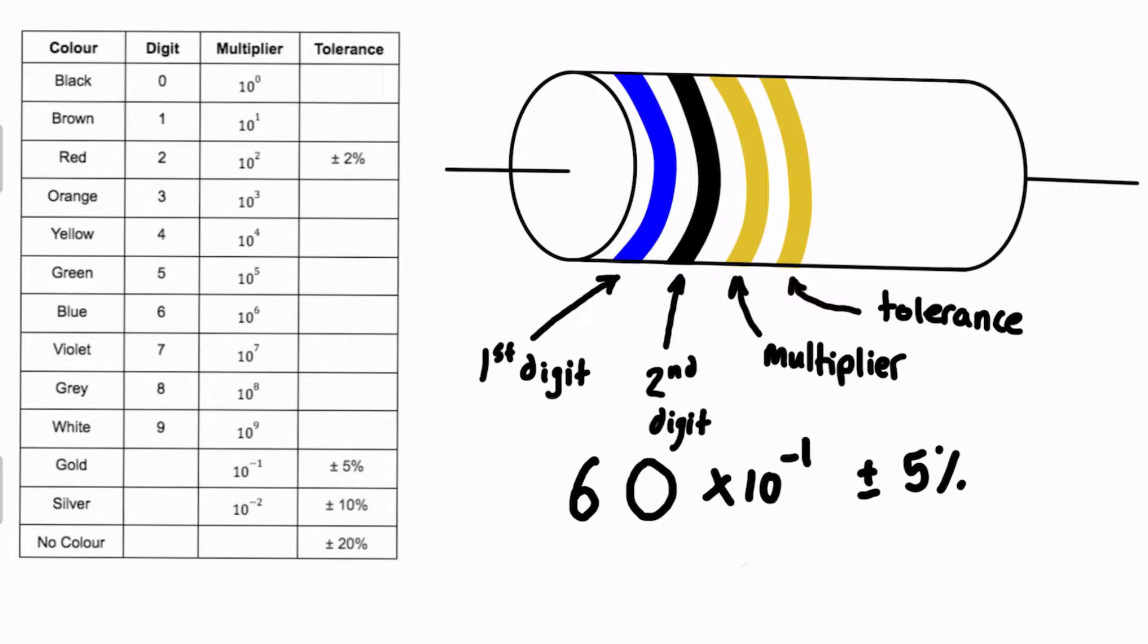Now we should just write this, clean this up a little bit, and write it in units of ohms, so 60 times 10 to the power of negative 1 is just equal to 6.0, and the units are ohms, plus or minus 5%. That is the maximum amount of accuracy that this manufacturer has said that this resistor is good until, so it might not be exactly 6 ohms in real life, it might be 5% less than that, or 5% greater.